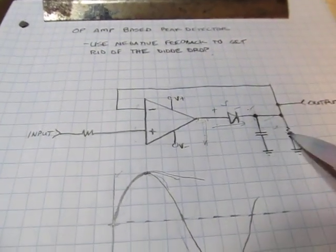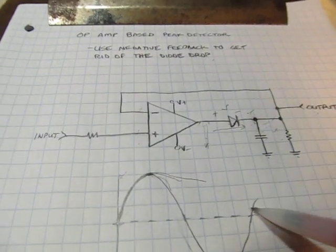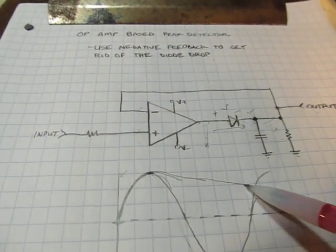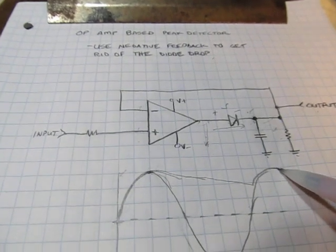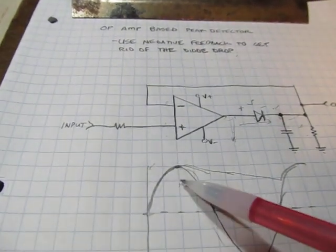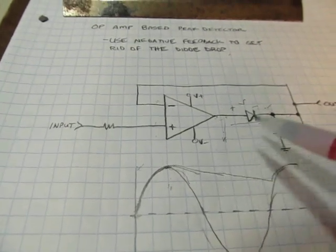So now we're getting that same droop that I showed earlier, due mainly to this RC. But now what will happen is that will continue until we hit the next cycle. But the advantage here is that we don't have a diode drop here anymore. The voltage just follows the input all the way to the top.